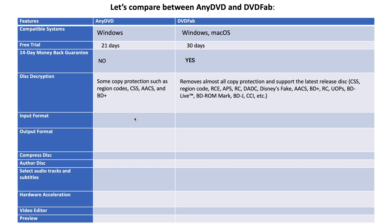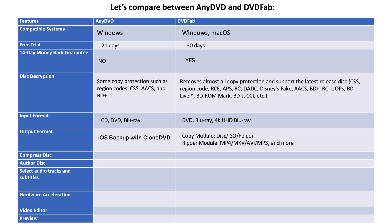For input format, AnyDVD can only support CD, DVD, and Blu-ray. While DVDFab supports DVD, Blu-ray, 4K UHD, and Ultra HD Blu-ray. For output format, you can use AnyDVD to do ISO backup with the CloneDVD app, while DVDFab supports copy modules like disc, ISO, or folder.